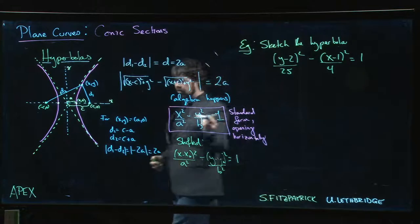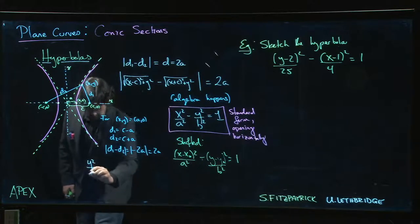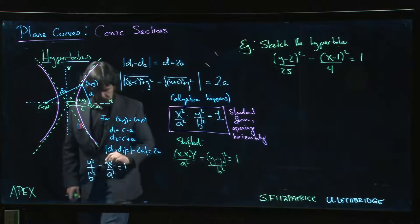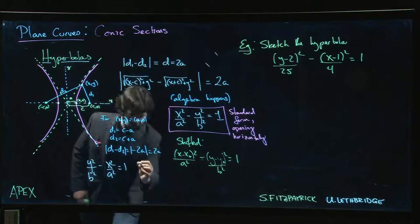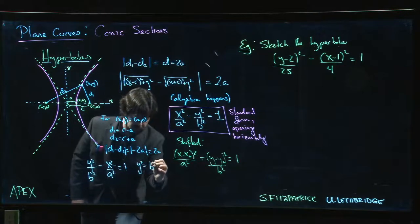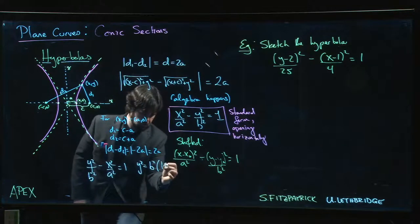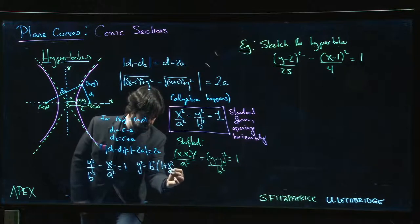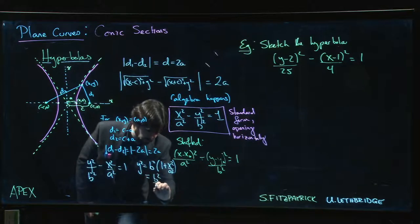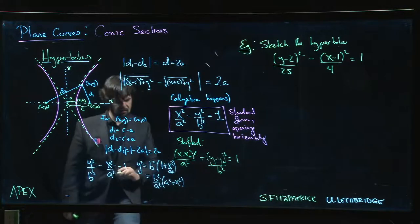Let's work through the vertical case. We have y² / b² minus x² / a² = 1. Moving the x² / a² term over and multiplying by b², we get y² = b² times (1 + x²/a²), which we can rewrite as (b²/a²) times (a² + x²).